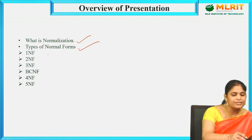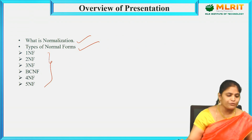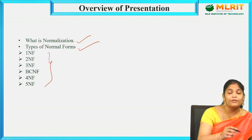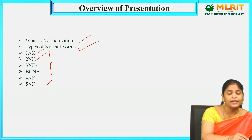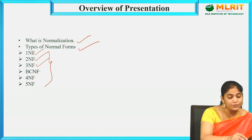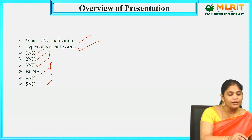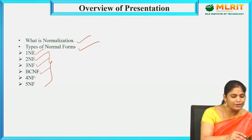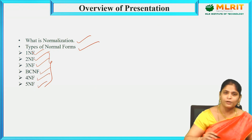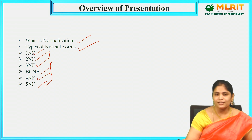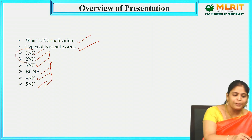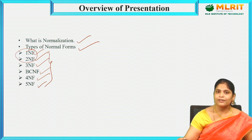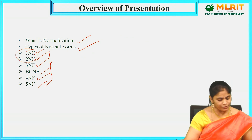We have basically six types of normal forms: 1NF, that is first normal form; second normal form; third normal form; BCNF, which stands for Boyce-Codd Normal Form, also called 3.5NF; fourth normal form; and fifth normal form. In today's session, let us discuss only the purpose of normalization, first normal form, and second normal form.